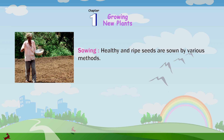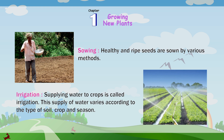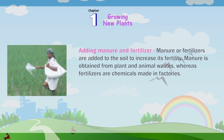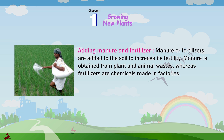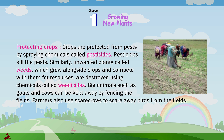Sowing: Healthy and ripe seeds are sown by various methods. Irrigation: Supplying water to crops is called irrigation. This supply of water varies according to the type of soil, crop and season. Adding manure and fertilizer: Manure or fertilizers are added to the soil to increase its fertility. Manure is obtained from plant and animal wastes, whereas fertilizers are chemicals made in factories. Protecting crops: Crops are protected from pests by spraying chemicals called pesticides. Pesticides kill the pests. Unwanted plants called weeds, which grow alongside crops and compete with them for resources, are destroyed using chemicals called weedicides.